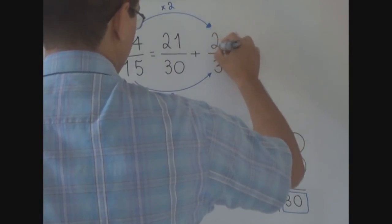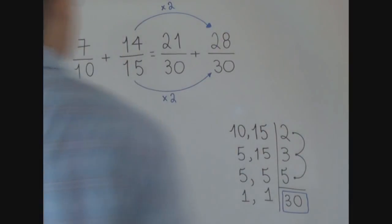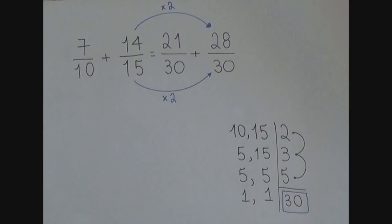Great. What is 14 times 2? 14 times 2 equals 28. What does it all mean? It means that 14 over 15 is a fraction equivalent to 28 over 30. That's right.